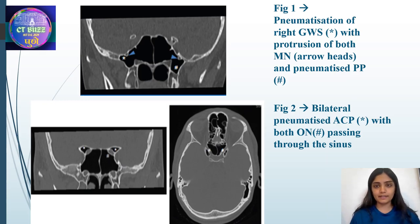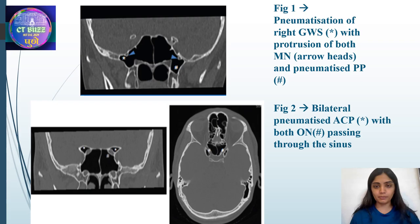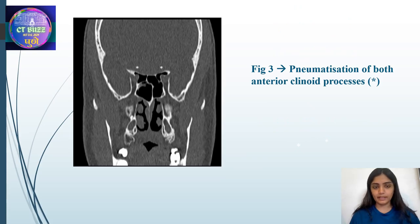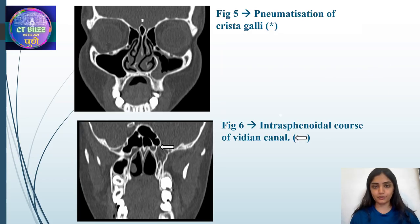In Figure 1, we see pneumatization of the greater wing of sphenoid, represented by asterisk, with protrusion of both maxillary nerves represented by arrowheads, and a pneumatized pterygoid process. In Figure 2, we see bilateral pneumatized anterior clinoid process with both optic nerves passing through the sinus. In Figure 3, we see pneumatization of the bilateral anterior clinoid process. In Figure 5, we see pneumatization of crista galli. And in Figure 6, we see the intrasphenoidal course of the vidian nerve.